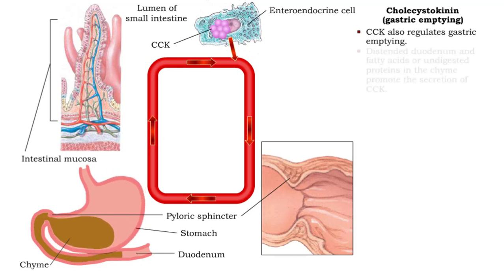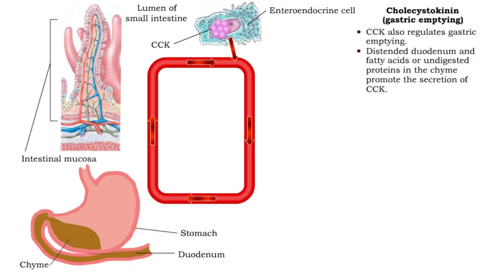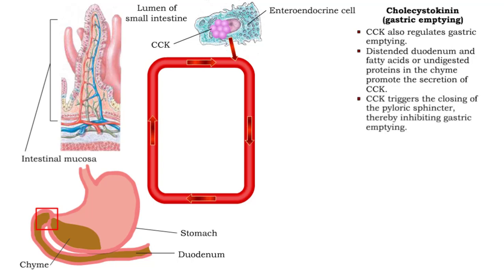Certain stimuli, such as a distended duodenum, or fatty acids and partially digested proteins in the chyme, initiate the entero-gastric reflex and promote the secretion of CCK. CCK then targets the muscularis forming the pyloric sphincter, and the sphincter closes. As a result, CCK helps decrease gastric motility and gastric emptying.